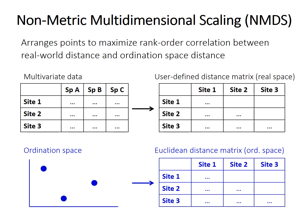The points are then moved around in ordination space until the computer finds the best arrangement — the one that has the highest correlation between the rank orders of those two distance matrices.